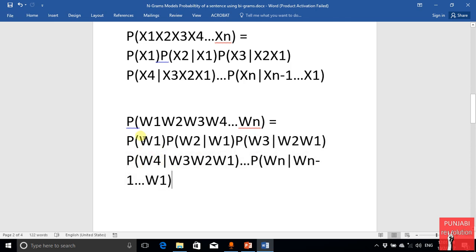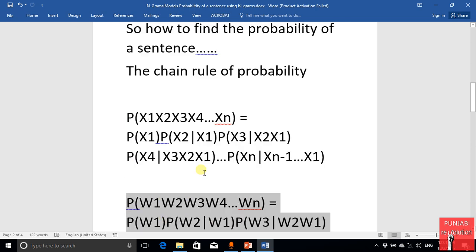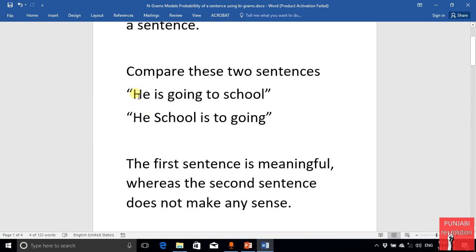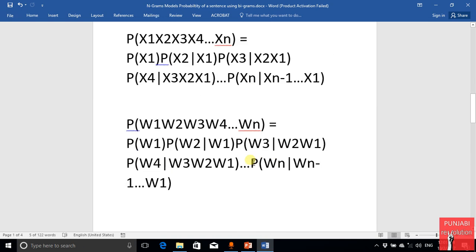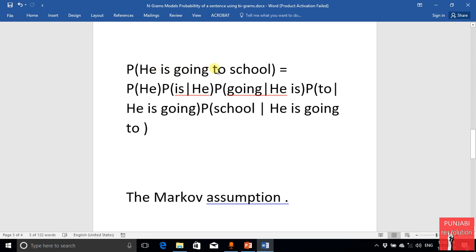So if we apply this chain rule on the given sentence that we studied here, 'He is going to school,' we will get probability of He, probability of is given He, probability of going given these two words, probability of to given all these three words, and probability of school given these four words. So here we can find the joint probability of the sentence using this formula.